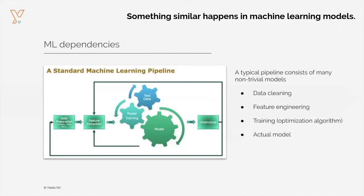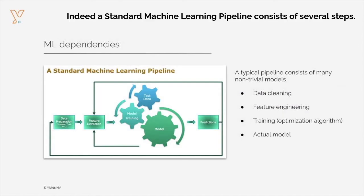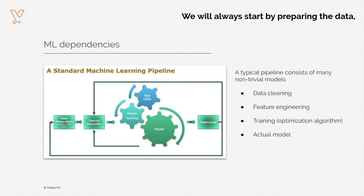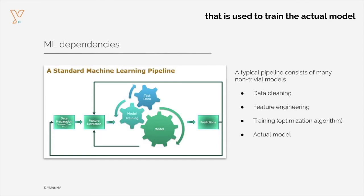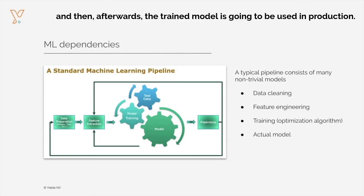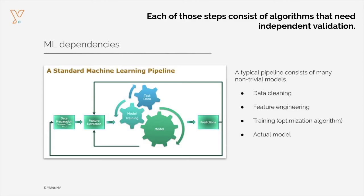Something similar happens in machine learning models. Indeed, a standard machine learning pipeline consists of several steps. We will always start by preparing the data, after which we are going to extract relevant features. And those features will then build, first of all, a training set that is used for training the actual model. And then afterwards, the trained model is going to be used in production. Each of those steps consists of algorithms that need independent validation.